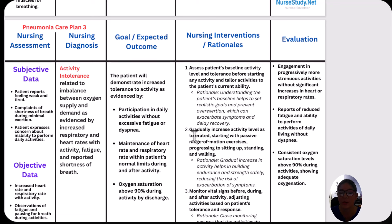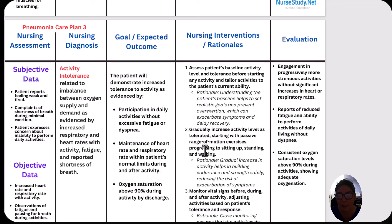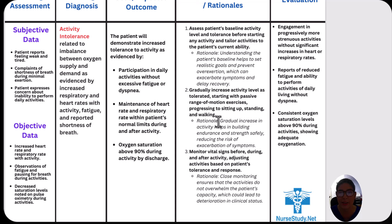Our nursing interventions: first, assess the patient's baseline activity level and tolerance before starting any activity and tailor activities to the patient's current ability. Understanding the patient's baseline helps to set realistic goals and prevent overexertion, which can exacerbate symptoms and delay recovery. Second, gradually increase activity as tolerated, starting with passive range of motion exercises, progressing to sitting up, standing, and walking. Gradual increase in activity builds endurance and strength safely and reduces the risk of exacerbation of symptoms.